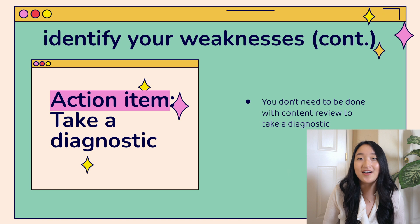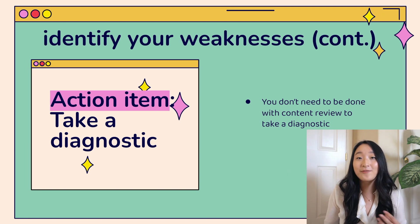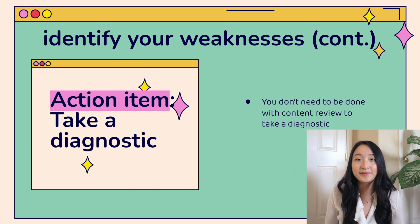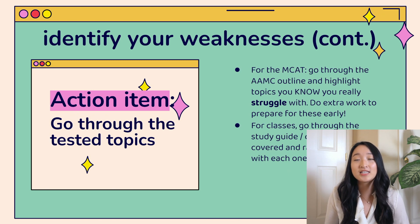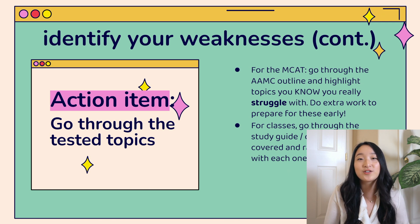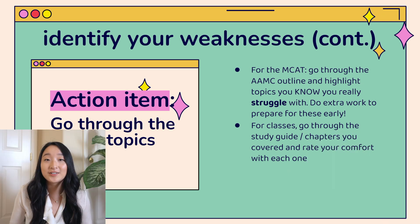While I initially thought the MCAT was going to be a lot of content, I didn't realize that a big portion of the exam is critical analysis and experimental passages. I would have been able to adjust my studying appropriately if I had taken a diagnostic earlier. If you don't have a diagnostic test available, you can still identify your weaknesses by going through the topics that will be tested. For the MCAT, go through the AAMC outline of all topics that can be covered, and spend one day highlighting the ones you struggle with the most.